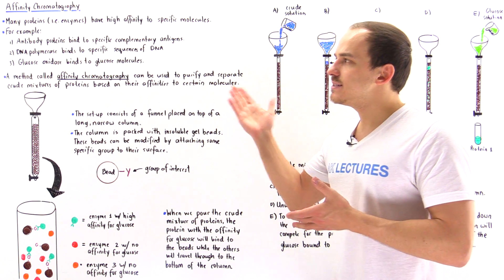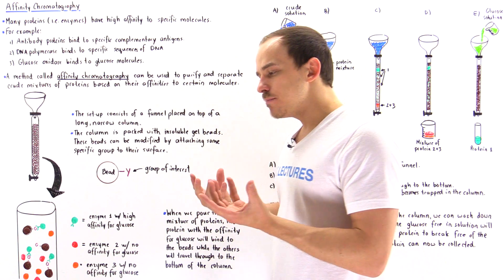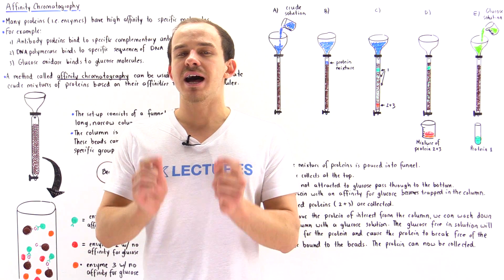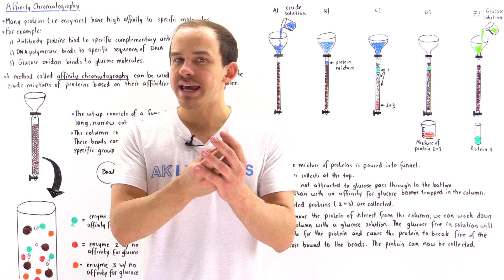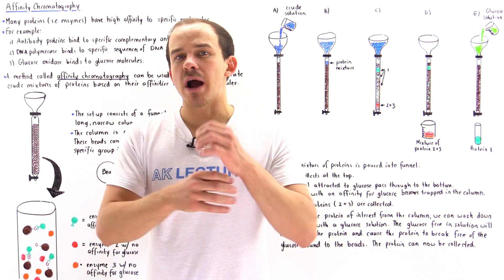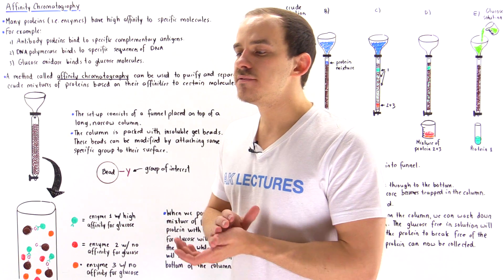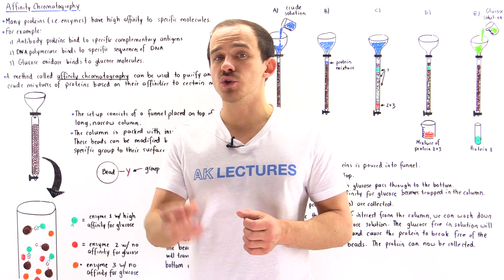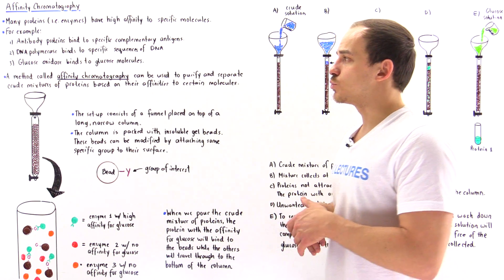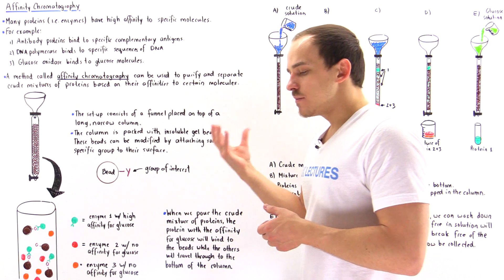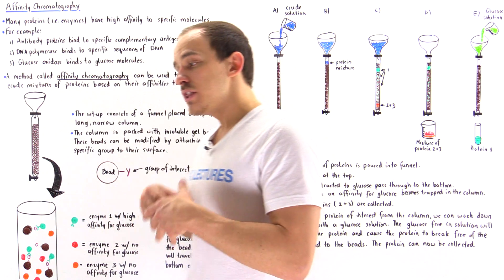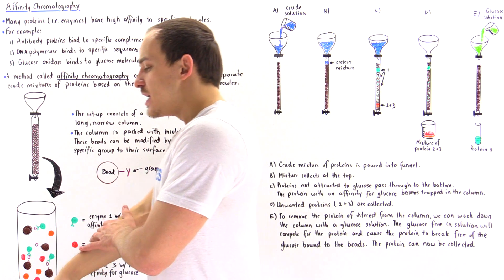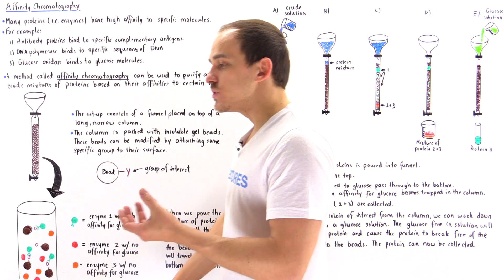Another example is the DNA polymerase molecule — basically an enzyme complex that only binds to specific sequences of nucleotides on our DNA. Once the enzyme binds onto our DNA, that initiates the process of DNA replication. Another example is glucose oxidase, which binds specifically to glucose molecules. So we have many examples of proteins that bind to specific molecules with high affinity. This is another property we can use to separate proteins.